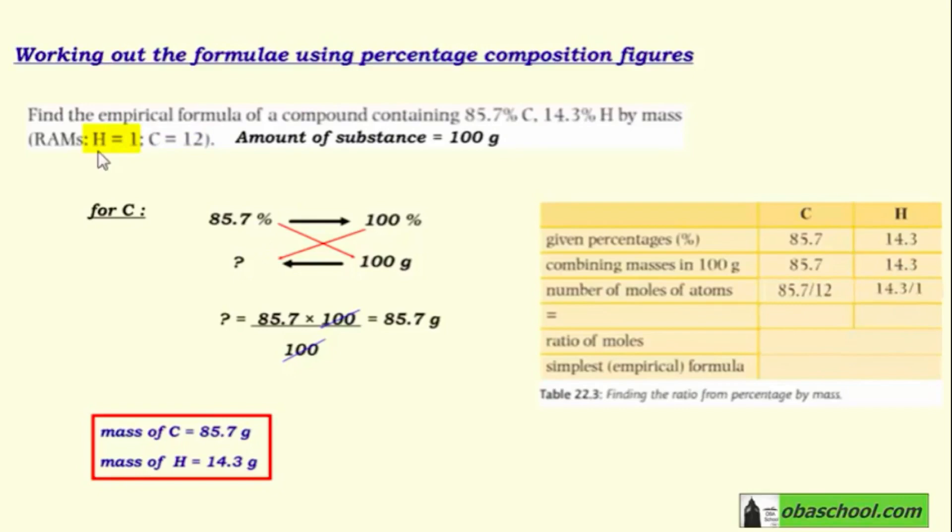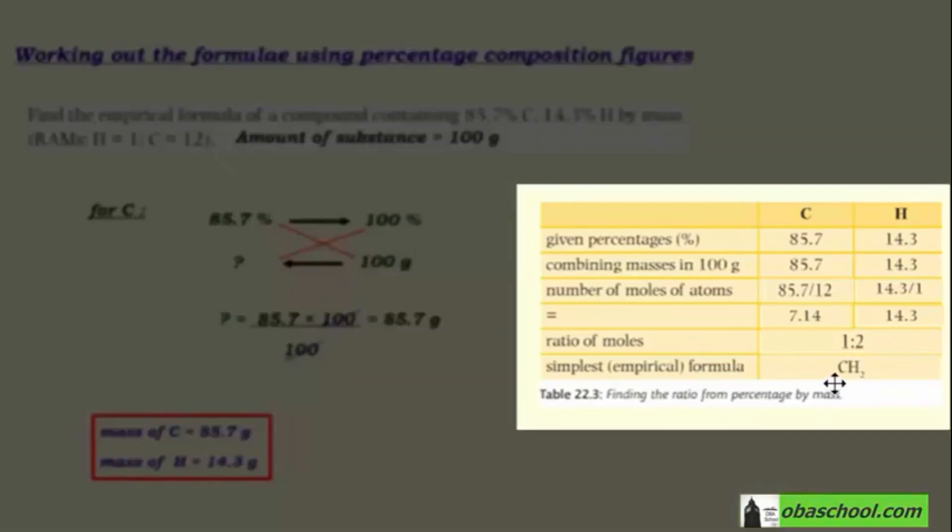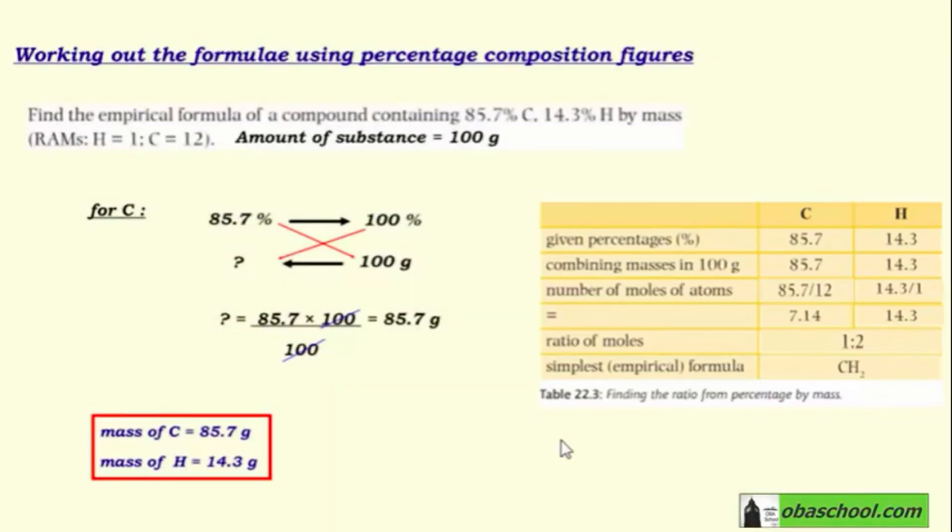As you can see here, 14.3 is double 7.14, so the ratio is 1 to 2. This means for one atom of carbon, we have two atoms of hydrogen. So the empirical formula is CH₂: one atom of carbon and two atoms of hydrogen.